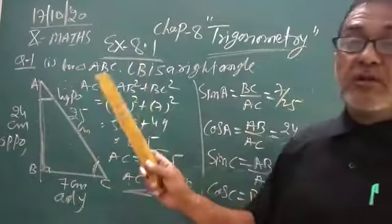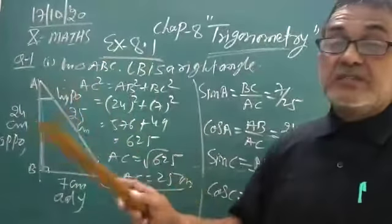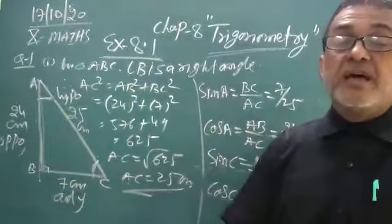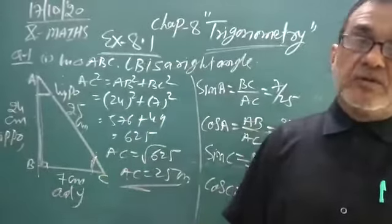So today I explain only one question. You will try to find the 6 trigonometric ratios if all the 3 sides of the triangles are given. Then you will try second question. Otherwise, I explain you tomorrow.